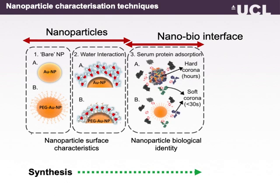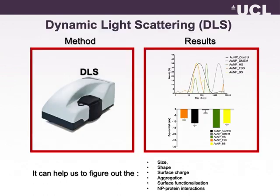Now that you have heard of some methods for nanoparticle surface characterization, let's look at how we can characterize nanoparticles once we place them inside a biological fluid, such as serum. Some of the methods mentioned for nanoparticle surface characterization can also be used for nanoparticle-serum interaction studies. When nanoparticles are placed in a biological fluid, they start forming a protein layer which is called the protein corona, and protein corona formation depends on the physicochemical characteristics of your nanoparticles.